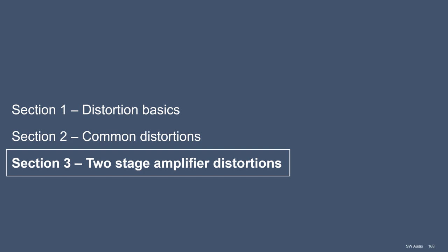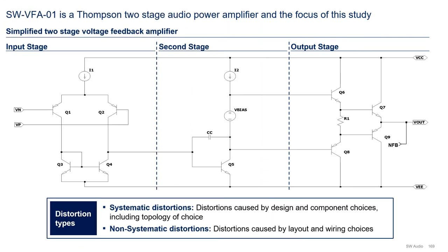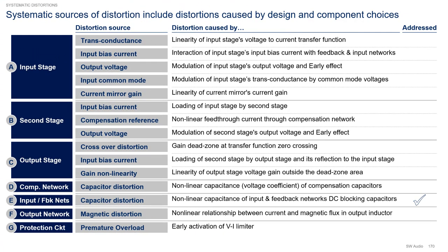Let's now look at our final topic for today: the distortions of a voltage feedback two-stage amplifier. The SNW-BFA01, the amplifier we are creating, is a Thomson two-stage amplifier topology. In all audio amplifiers, there are two categories of distortions: systematic and non-systematic. Systematic distortions are distortions caused by design and component choices, including the topology of choice. Non-systematic distortions are distortions caused by layout and wiring choices. Systematic distortion contributing sections include the input stage, second stage, output stage, compensation network, input and feedback networks, output network, and protection circuit.